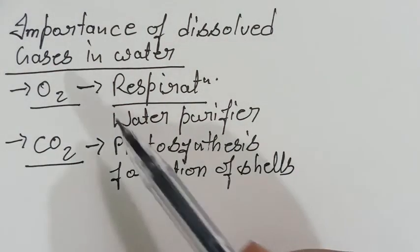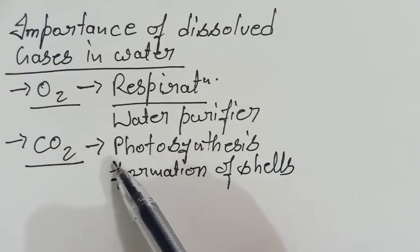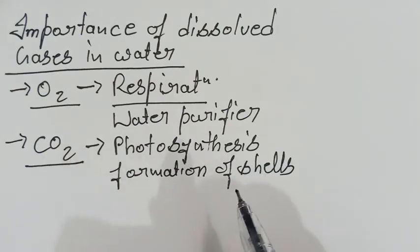So these two are the functions of dissolved carbon dioxide: first one photosynthesis, second one formation of shells.